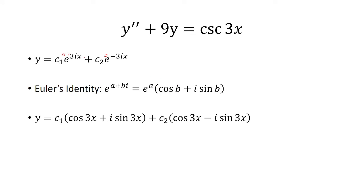So b for the first one is going to be 3x. That's why we have c₁ times cosine 3x plus i sine 3x.